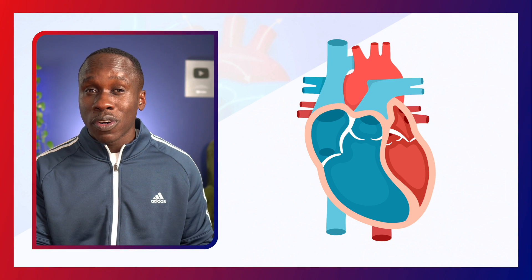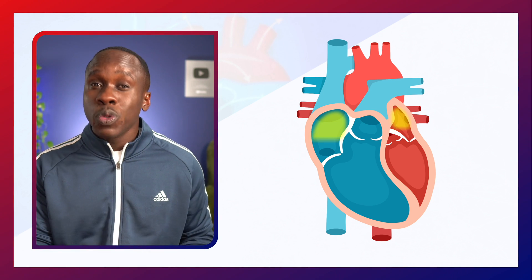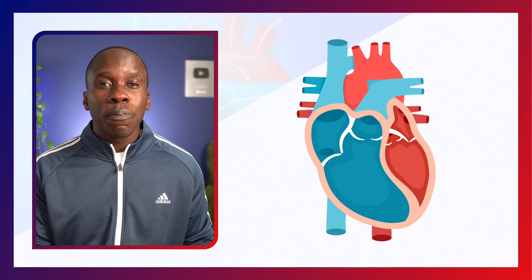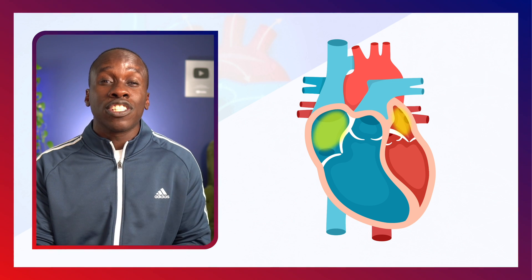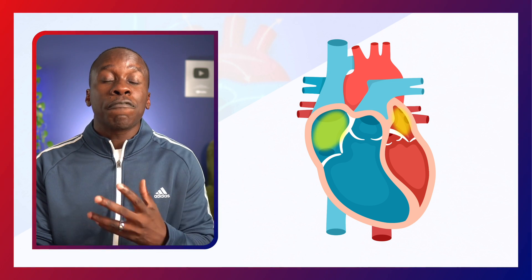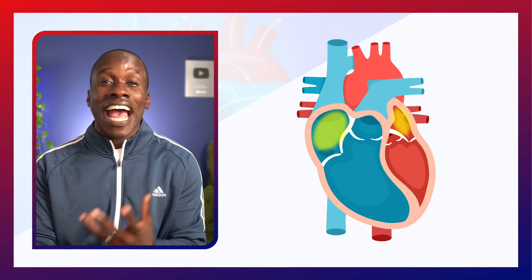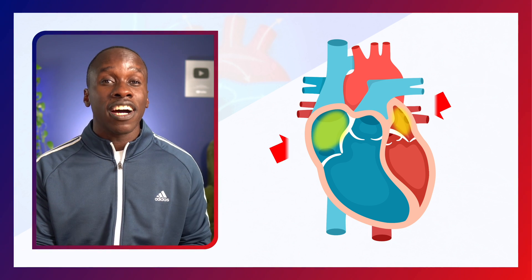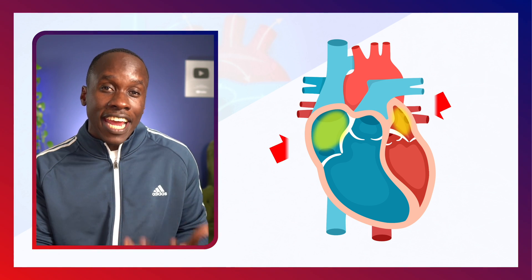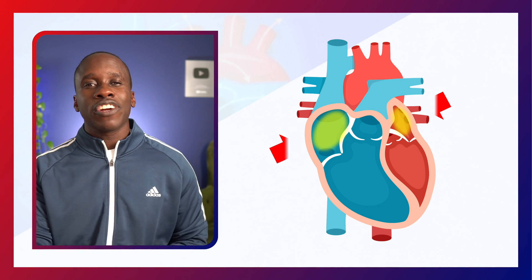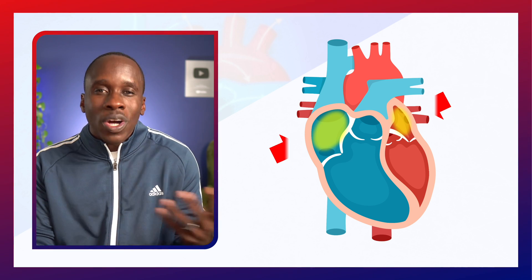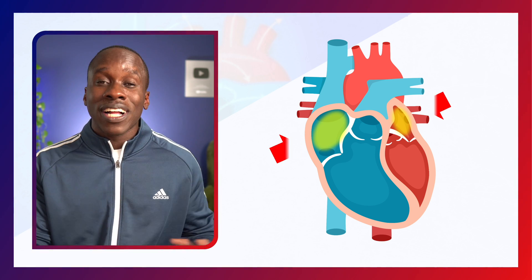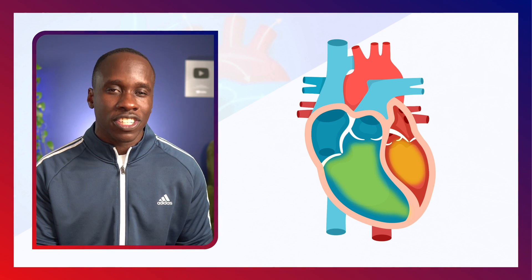In the heart, we have four chambers — two atria and two ventricles. When the blood first enters the heart, it enters via the two atria. And the first thing that's gonna happen in the cardiac cycle is the atria are gonna contract, also known as atrial systole. When the atria contract, the blood that was in the atria is gonna get pumped into the ventricles.